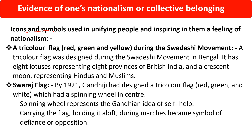Icons and symbols also played a great role in unifying people and inspiring a feeling of nationalism. A tricolor flag with colors red, green, and yellow during the Swadeshi movement in Bengal played a great role in unifying the Indian people. It had eight lotuses representing eight provinces of British India and a crescent moon representing Hindus and Muslims. By 1921, Gandhiji had designed a Swaraj tricolor flag with colors red, green, and white, which had a spinning wheel in the center, representing the Gandhian idea of self-help. Carrying the flag and holding it aloft during marches became a symbol of defiance.